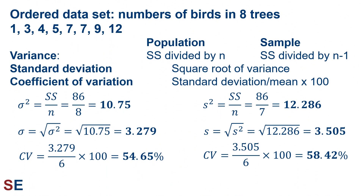The variance, standard deviation, and coefficient of variation all begin with the sum of squares. The variance is the sum of squares divided by n for a population or n−1 for a sample, represented by σ² or s² respectively. Those values are 86 divided by 8 giving 10.75, or 86 divided by 7 giving 12.286. The standard deviation is the square root of the variance: σ equals √10.75 equals 3.279 for the population; s equals √12.286 equals 3.505 for the sample. The coefficient of variation is the standard deviation divided by the mean times 100: for the population, 3.279 divided by 6 times 100 gives 54.65%.